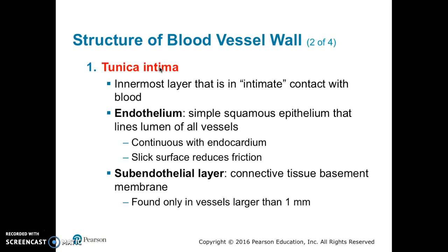Beginning with the innermost layer, we have the tunica intima. It is in direct contact with the blood that flows through the lumen of the vessel. Simple squamous epithelium lines the lumen of all vessels, creating the endothelium. It is continuous with the endocardium of the heart and is very slick, so it reduces friction of the blood flowing over it. The sub-endothelial layer is a connective tissue basement membrane only found in vessels larger than one millimeter.